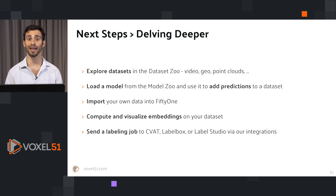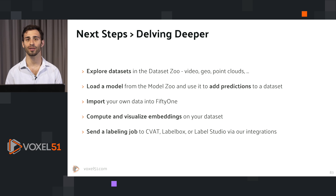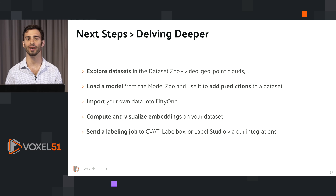If you want to dive deeper, here are a few things you could do. Explore some of the datasets in the FiftyOne dataset zoo. Try some datasets that include videos, point clouds, geodata, whatever else your heart desires. Load a model from the FiftyOne model zoo and use it to add predictions to your dataset.